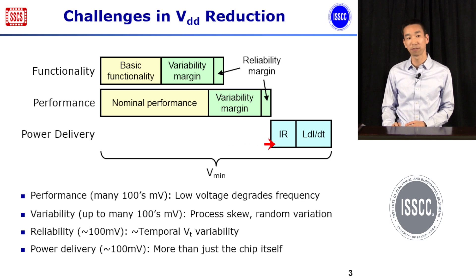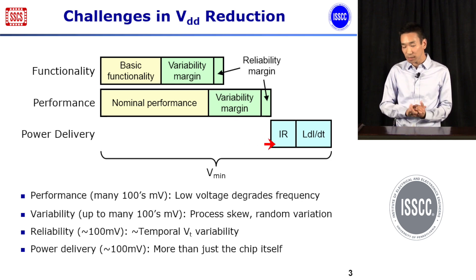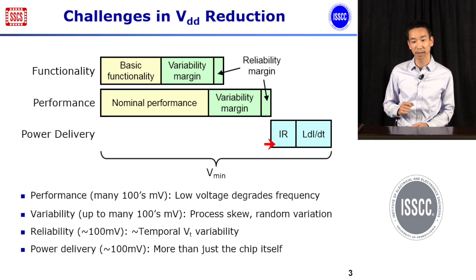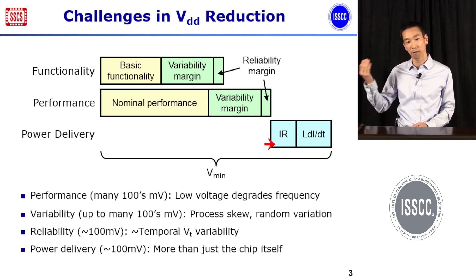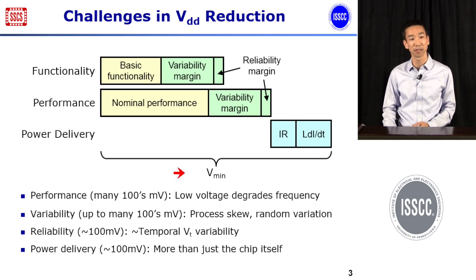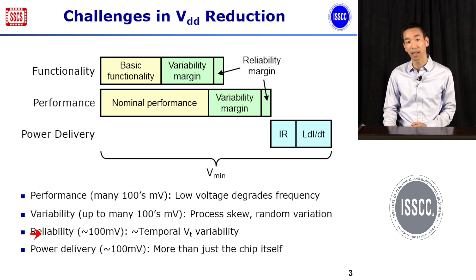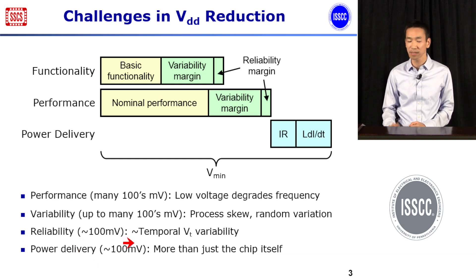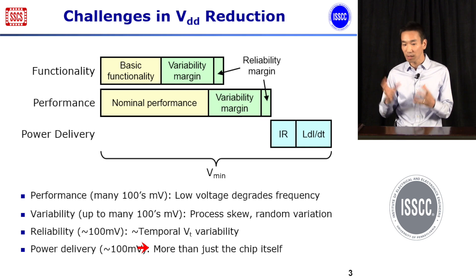On top of this, we're going to have to apply a power delivery margin. This is a little bit unusual for chip designers to think about, but we have to remember that we're trying to design power efficient systems. We always have to deliver power from the wall plug out to our chip, and we're always going to incur some amount of IR drops and LDIDT noise. So when we talk about Vmin, we have to think about all of these together. For simplicity, we can think of reliability as somewhat of a temporal VT variation, and so we can lump that concept in with variability.